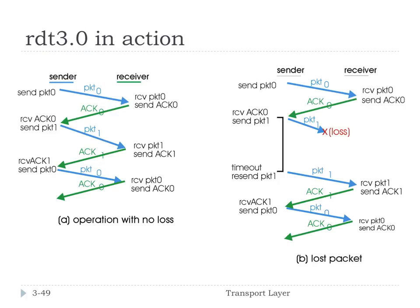Here are the scenarios illustrated in pictures. With no loss: the sender sends packet 0, gets an ACK for packet 0, sends packet 1, gets ACK for packet 1, and so on — normal stop-and-wait operation always alternating 0, 1, 0, 1. If a packet is lost: sender sends packet 0 (ACK received), sends packet 1 (lost). After the countdown timer expires, the sender resends packet 1, it's received, and ACKed. This is how RDT 3.0 works when a packet is lost.